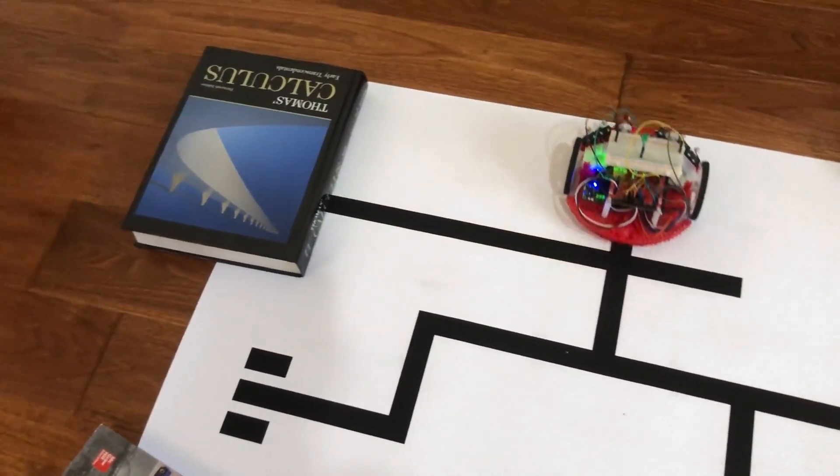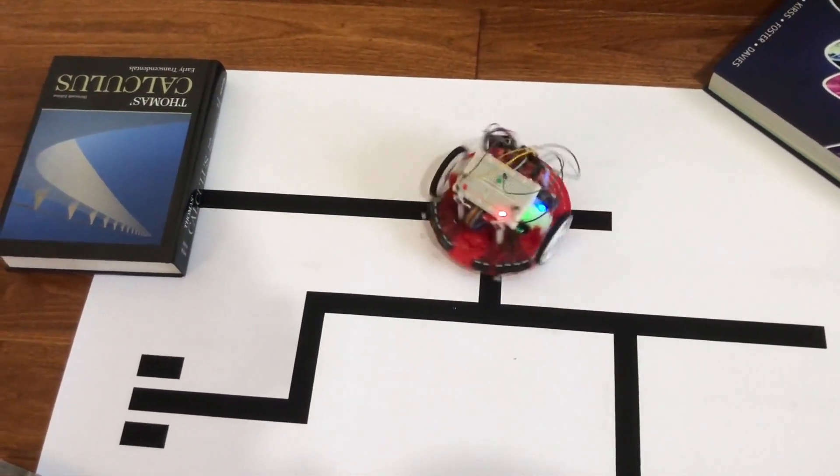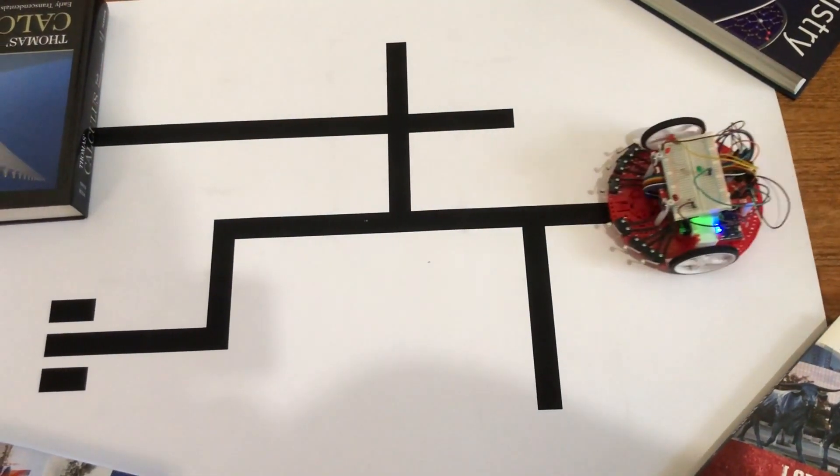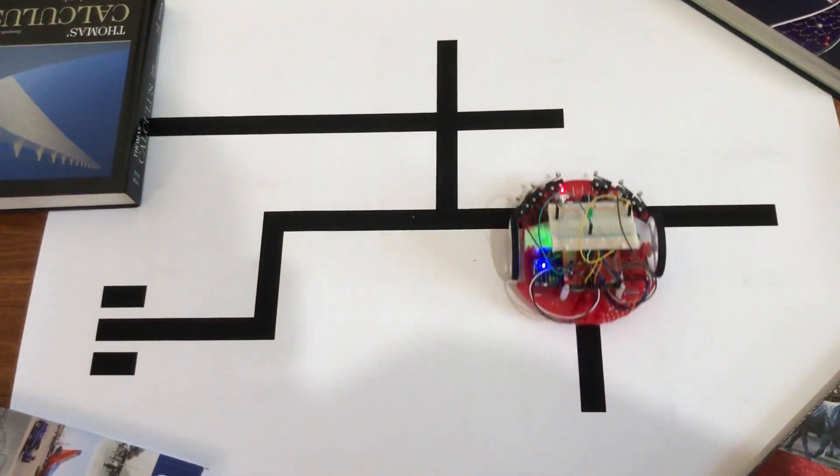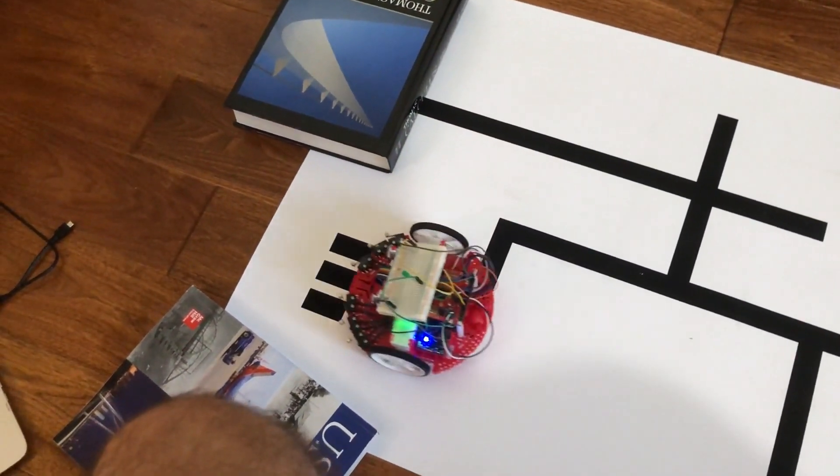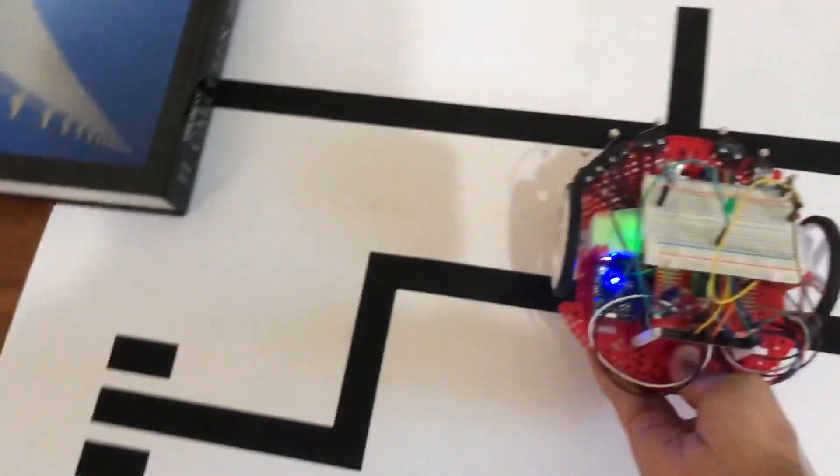You can see when it hits something it backs up and then turns around, and it has no issues dealing with a four-way intersection. From that starting spot in the maze, it does go over every line. As you can see, it found the treasure. Now I'm going to put it back in the middle of the maze.